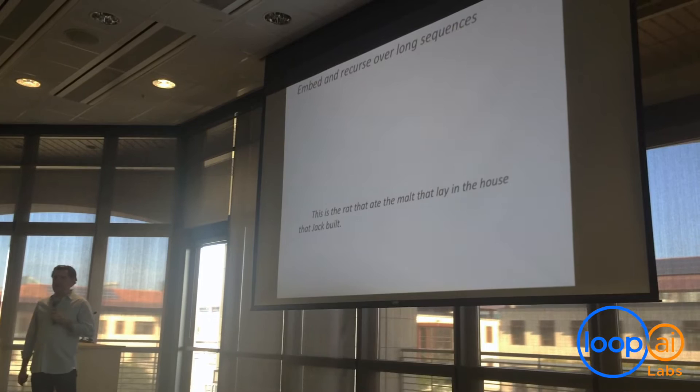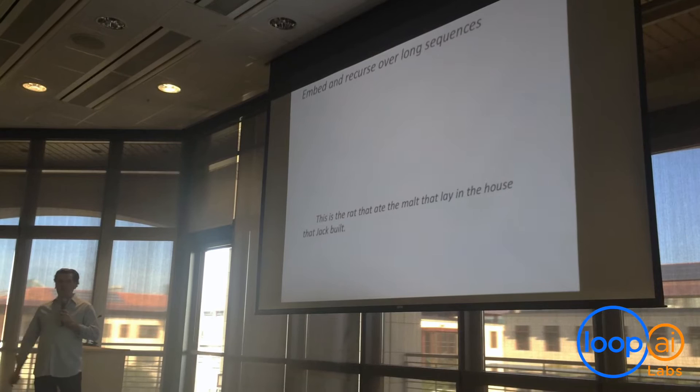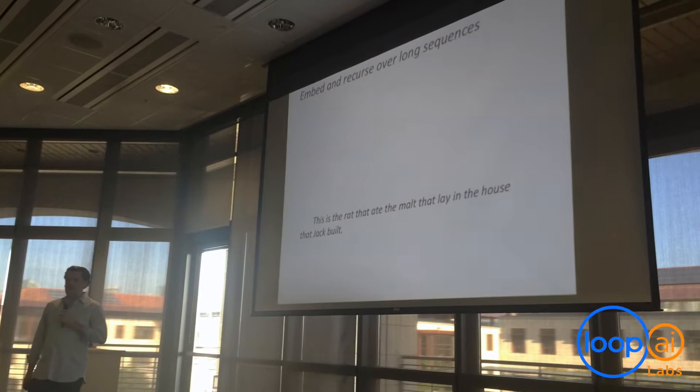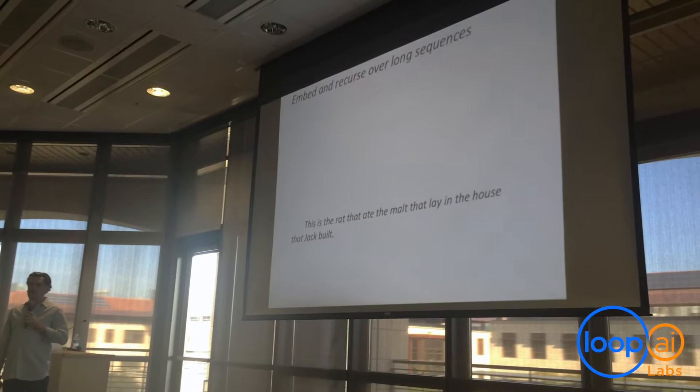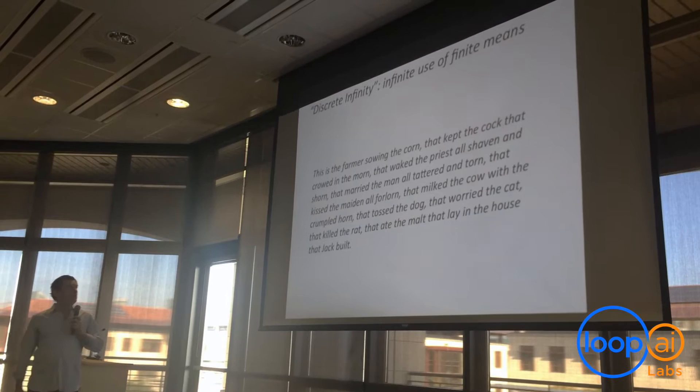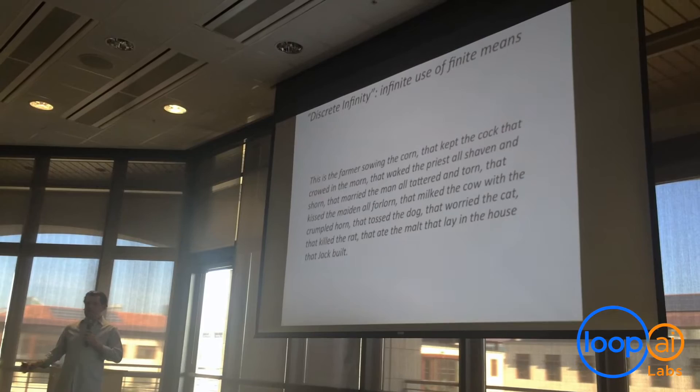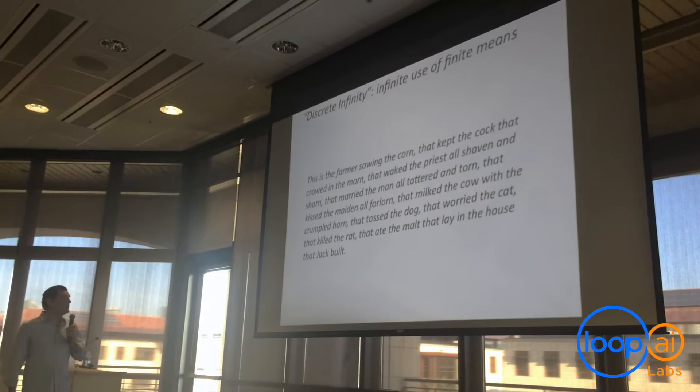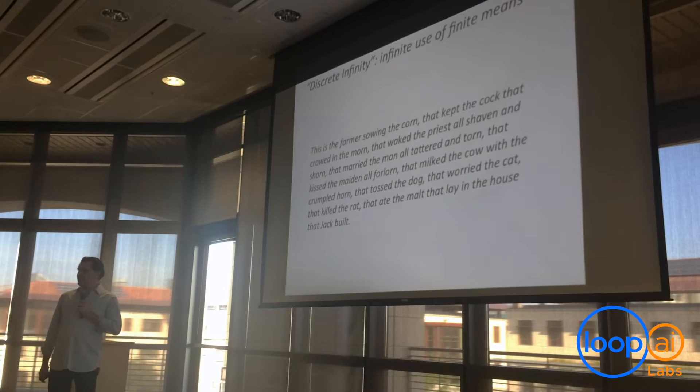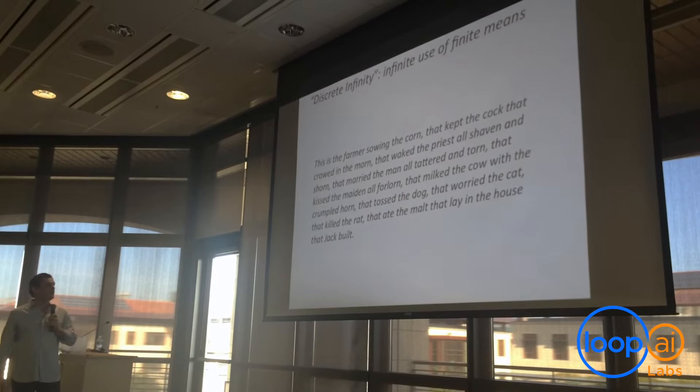Another thing is that we're able to embed and recurse over long sequences. We're able to make up things like 'this is the rat that ate the malt that lay in the house that Jack built.' This shows a kind of ability for recursion that you don't see in animal communication. This leads to what von Humboldt called the infinite use of finite means, or what is sometimes called discrete infinity — we have a limited vocabulary, but from that we're able to generate an unlimited and infinite set of communicative utterances.